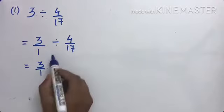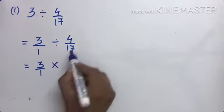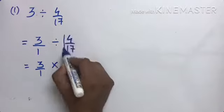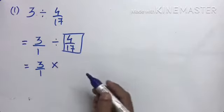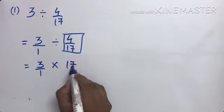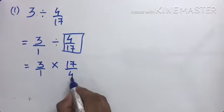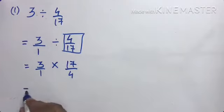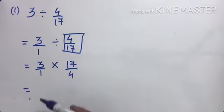यह पहला number same to same रहेगा, इसको कुछ भी change नहीं करना। यहाँ पे divide का multiply करूँ तो यह जो number है उसका हो जाएगा reciprocal — 17 by 4। अभी multiplication में numerator, numerator के साथ multiply होता है और denominator, denominator के साथ multiply होता है।